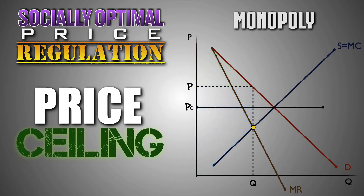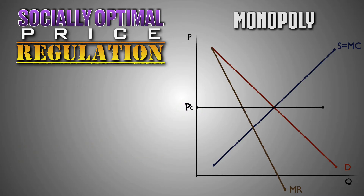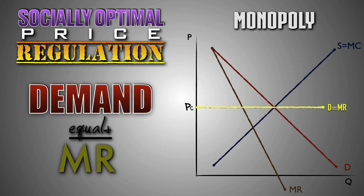Remember that a firm cannot legally charge a market price that exceeds an effective price ceiling. As such, the monopolist has an incentive to charge the price set by the government because it's the highest price it's capable of charging. When the firm sells all of its output at the government-established price, the revenue gained from each unit sold will equal the market price. Effectively, the firm's marginal revenue curve and demand curve become identical, and the two curves become perfectly elastic. For the regulated monopolist, demand equals marginal revenue equals price at the government-established price ceiling. So, where should the price ceiling be set if the government wants the monopoly to produce an allocatively efficient level of output?